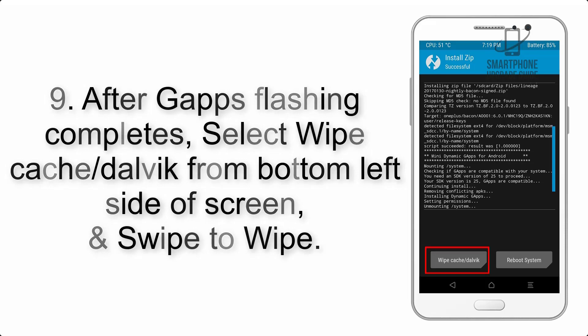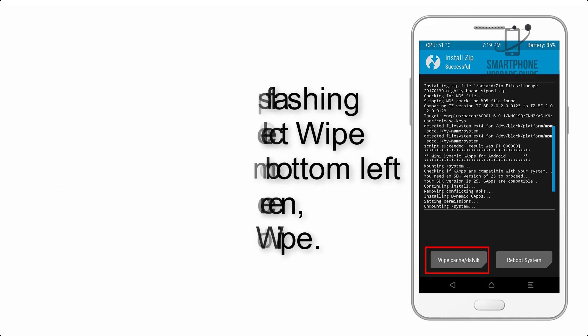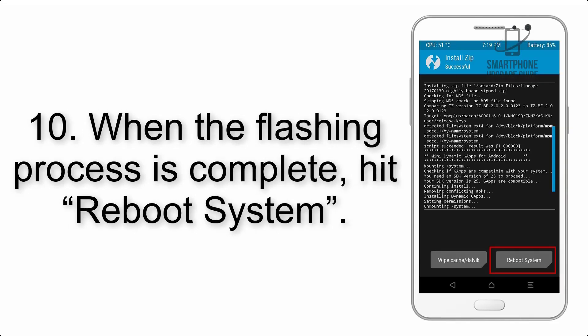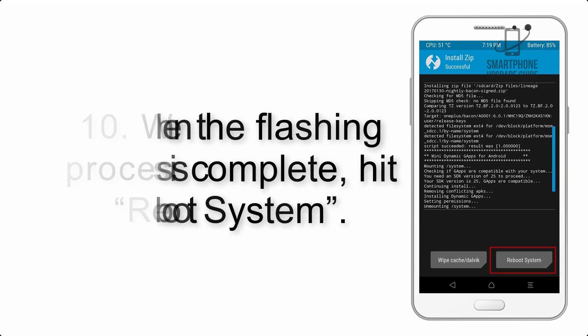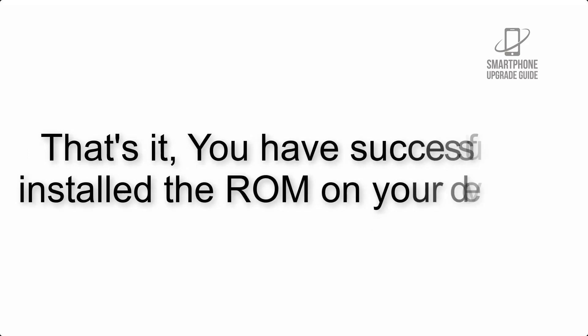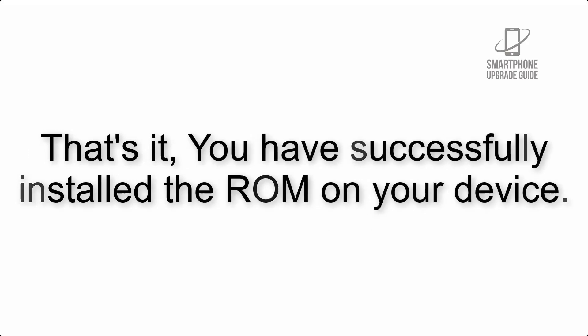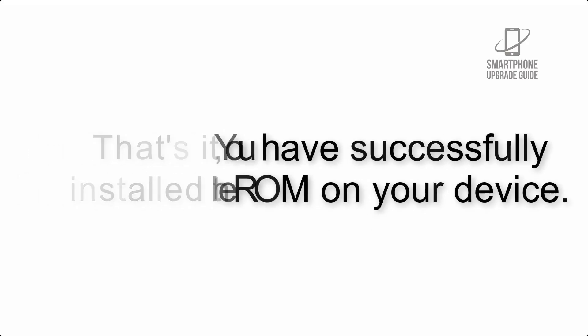Step 9: After GApps flashing completes, select Wipe Cache and Dalvik from the bottom left side of the screen and swipe to wipe. Step 10: When the flashing process is complete, hit Reboot System. That's it — you have successfully installed the ROM on your device.